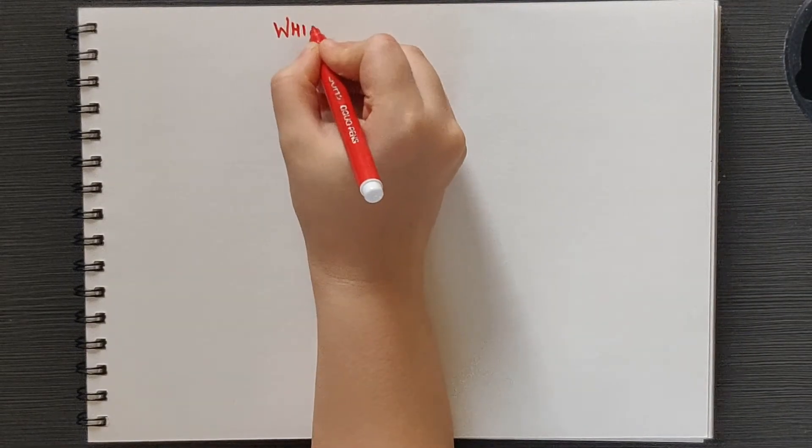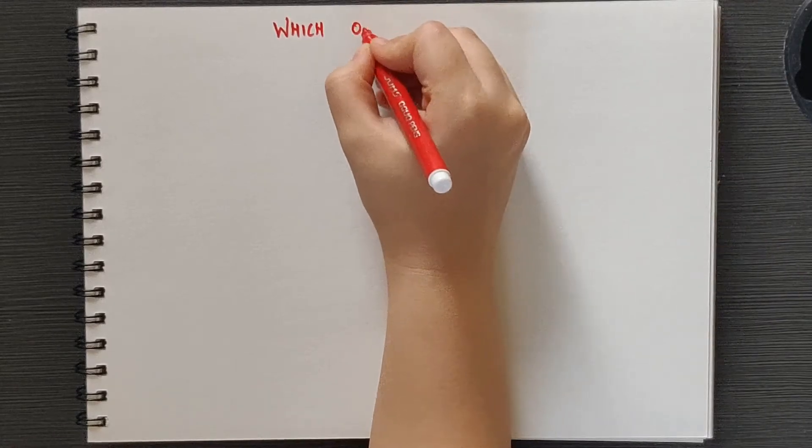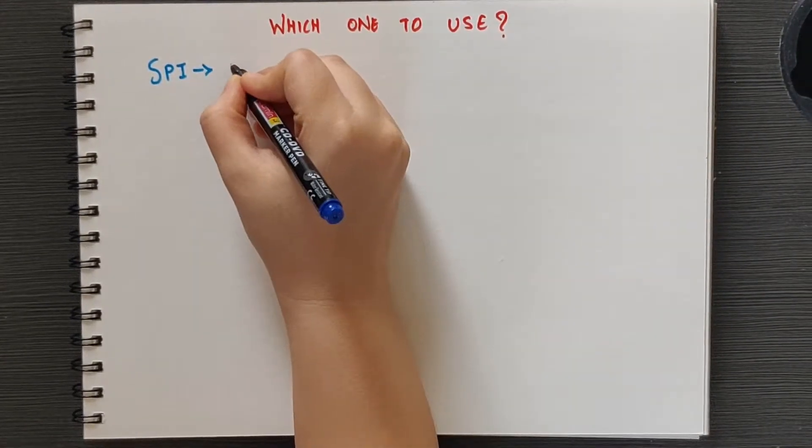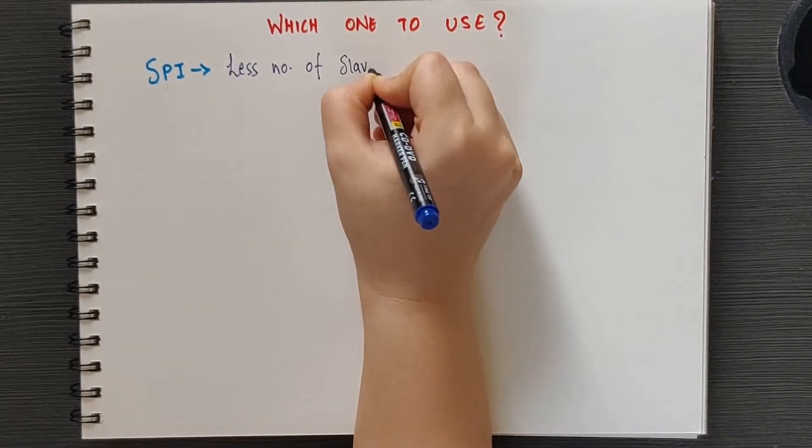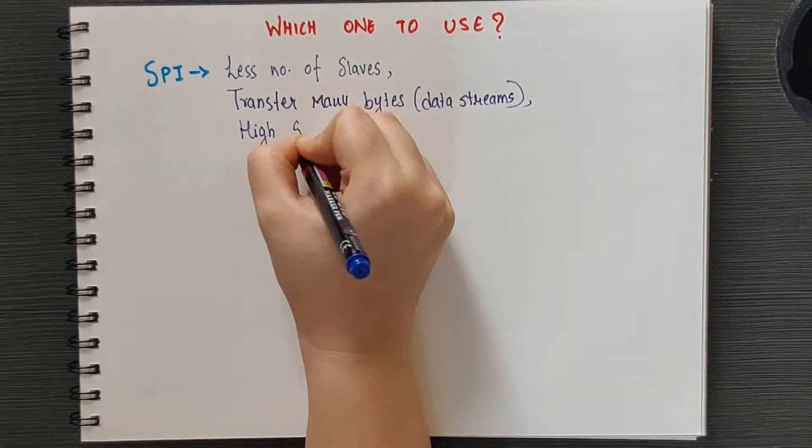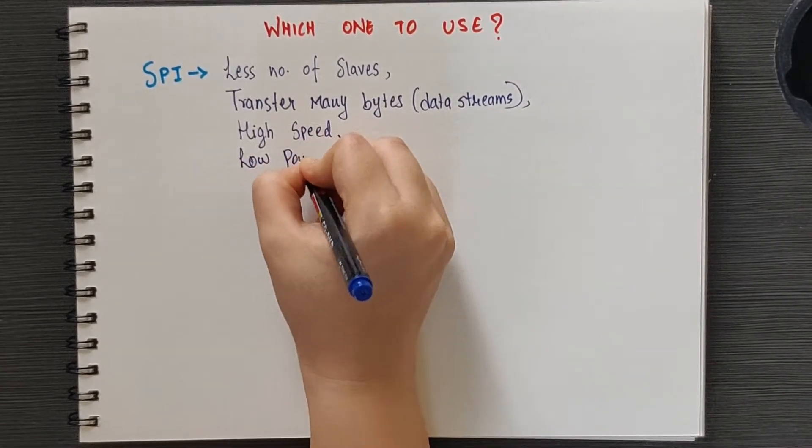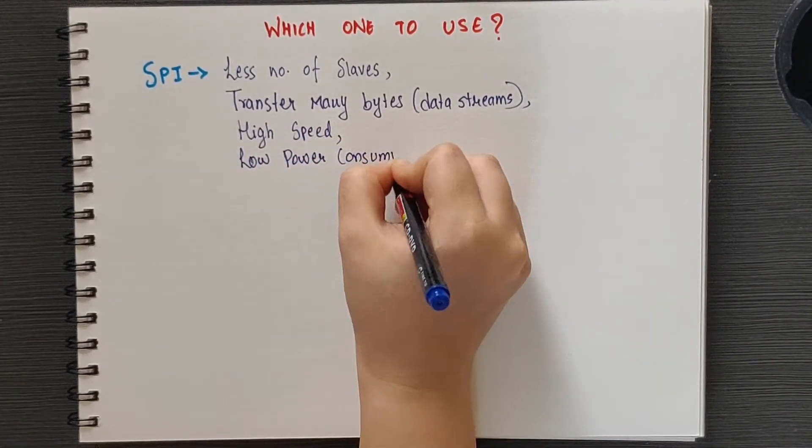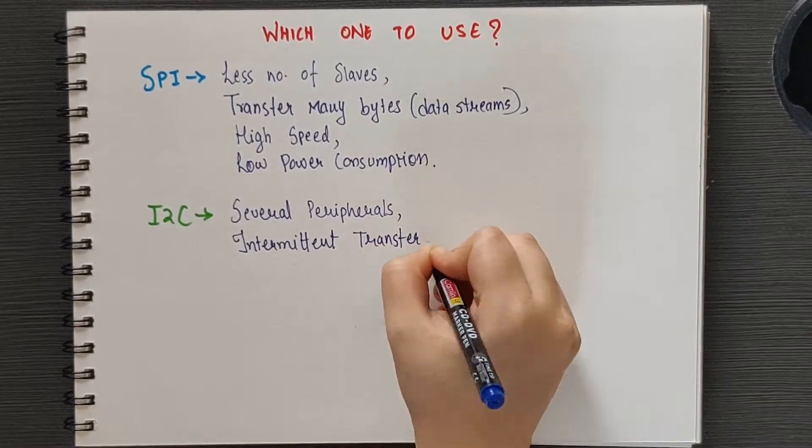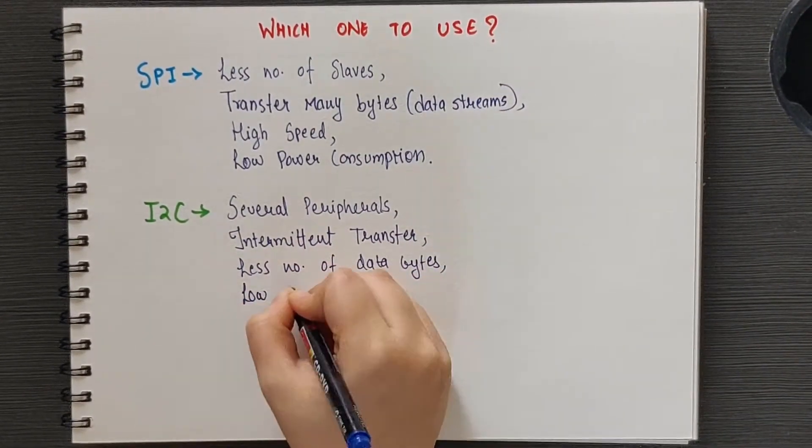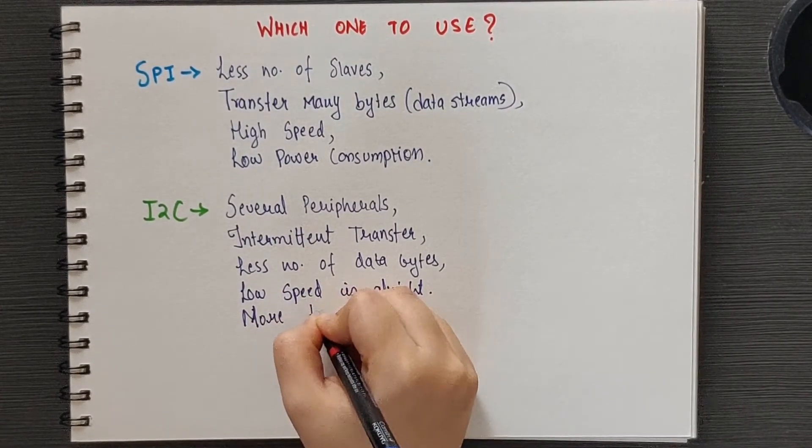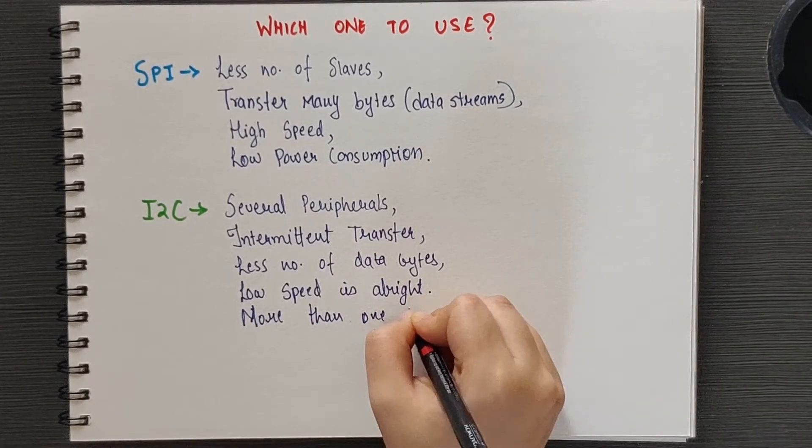There are a lot of differences between SPI and I2C. So what should be the criteria to finalize one out of these two in your design? As a simplified rule of thumb, SPI is a better choice if you want to use a small number of peripherals and transfer a large amount of data or data streams at a high speed with low power consumption. I2C is the best option if you want to control several peripherals with intermittent transfer of few bytes of data or where speed is not much of concern. I2C is preferred when your design requires more than one master.